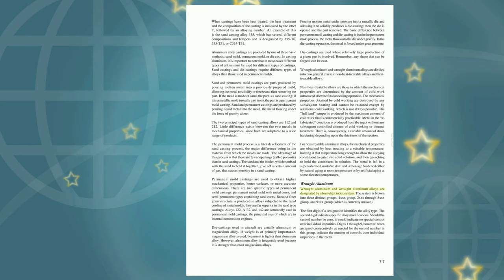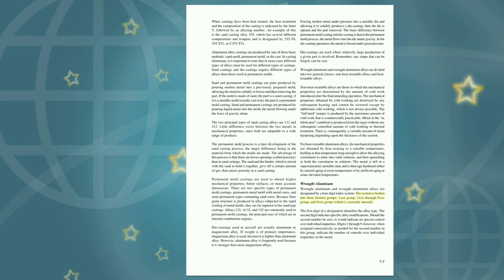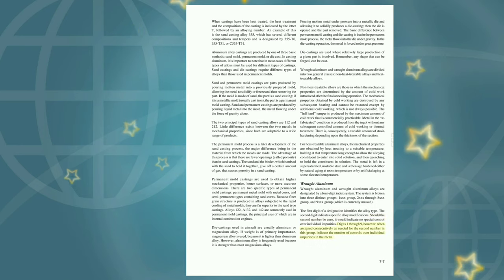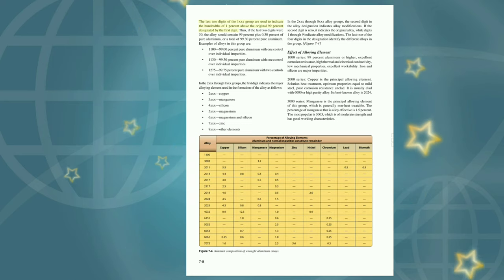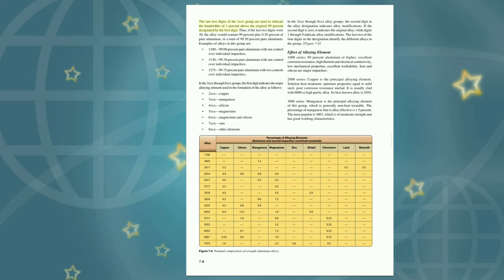Wrought aluminum and aluminum alloys are designated by a four-digit index system broken into three distinct groups: 1XXX group, 2XXX through 8XXX group, and 9XXX group (currently unused). The first digit identifies the alloy type; the second digit indicates specific alloy modifications (zero indicating no special control over individual impurities, digits 1–9 indicating controls over individual impurities). The last two digits of the 1XXX group indicate the hundredths of 1% above the original 99% designated by the first digit. Thus, if the last two digits were 30, the alloy would contain 99.30% pure aluminum.